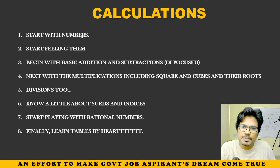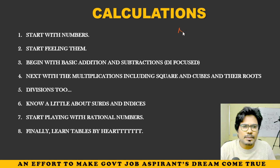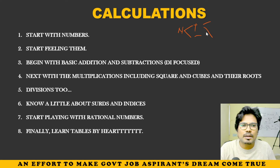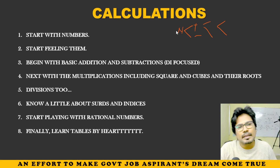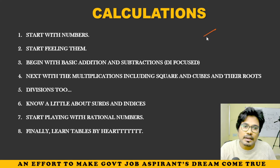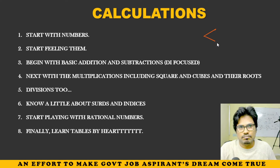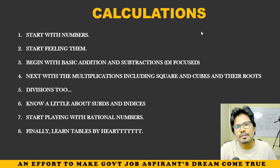Numbers, numbers, numbers — positive numbers, negative numbers, even numbers, odd numbers, prime numbers, co-prime numbers — minimum things. Real values, integers — okay. Rational, irrational — p by q form. Start from these basics.